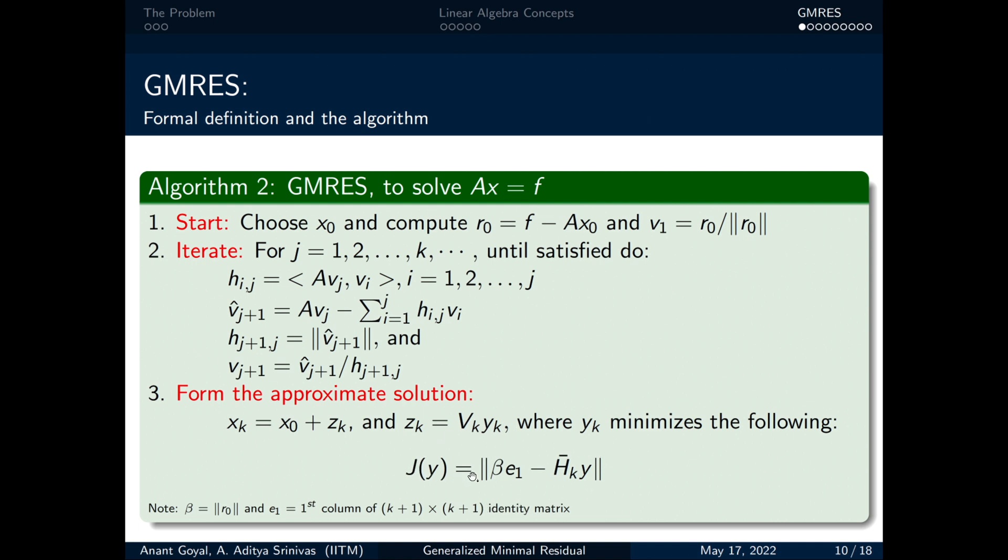Here, in every iteration, we minimize the L₂ norm of β e₁ minus h̄ₖy. For more details on how this expression of J(y) comes about, please pause the video and ponder for some time or look at the detailed derivation provided in the video's description.